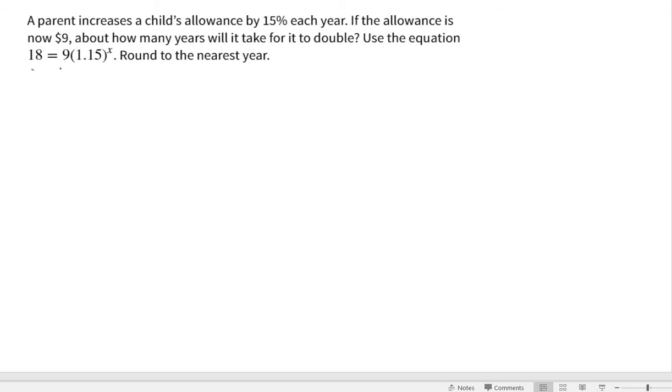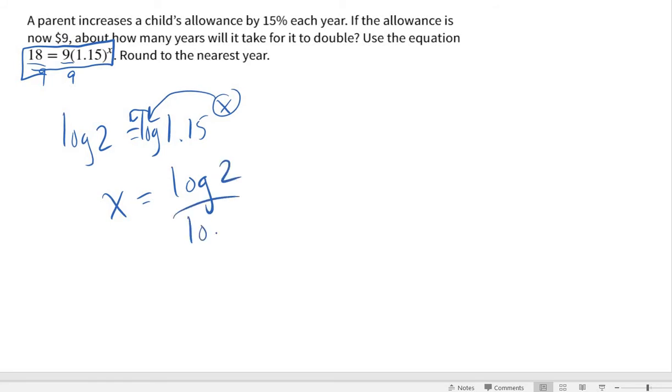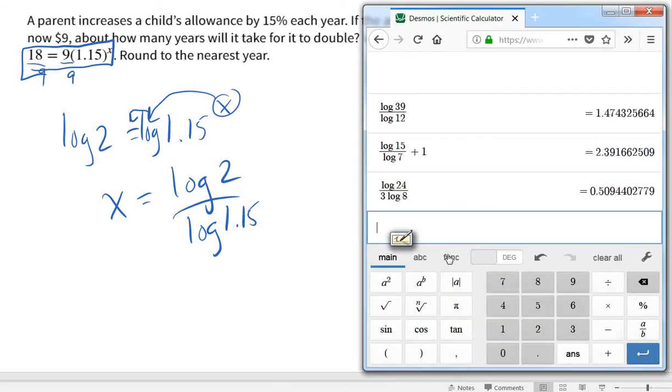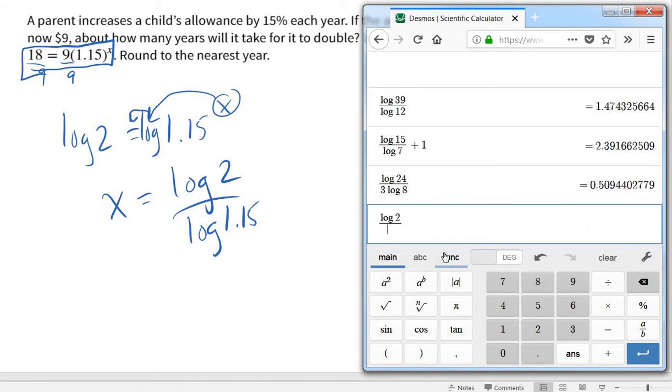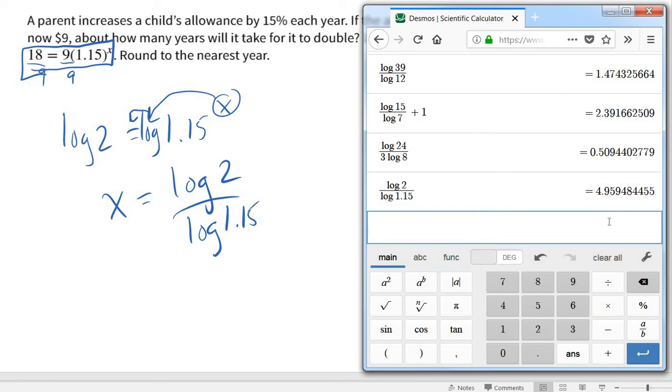Now, word problem. Don't be intimidated. And they gave us the equation, so you don't even need to look at all those words. You're basically just solving this equation. Now, notice in this one, the exponential is not by itself. So we need to divide that 9 over. So if we do that, of course, we would get 2 equals 1.15 to the x. Now it's just like any of the other problems. Let's do the log of both sides. That allows you to bring your x out front. And so x equals the log of 2 divided by the log of 1.15. Let's go plug that in our calculator. So log of 2 divided by the log of 1.15. Round it to the nearest year. It looks like it's about five years.